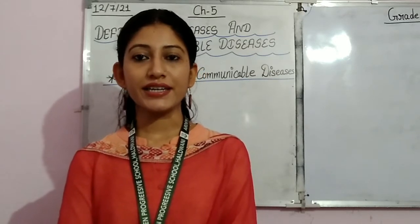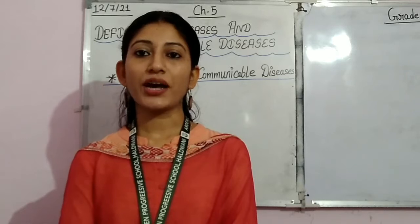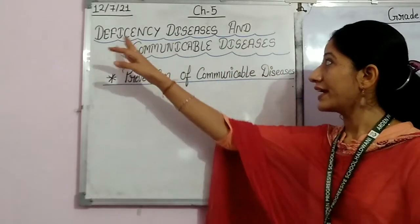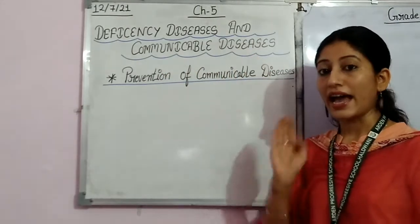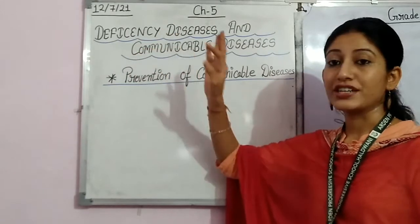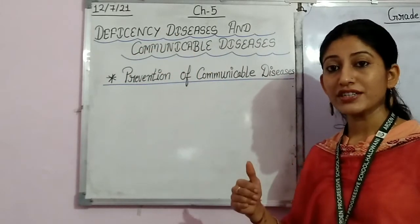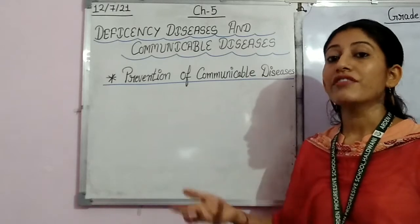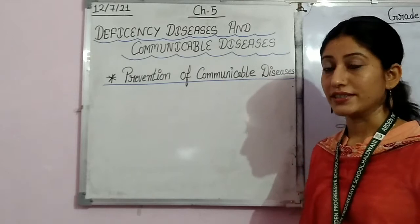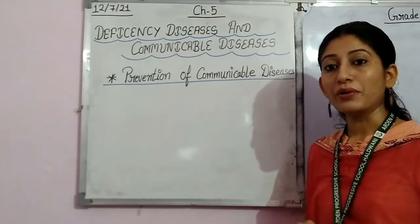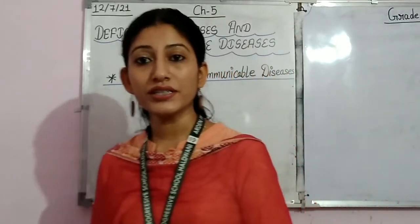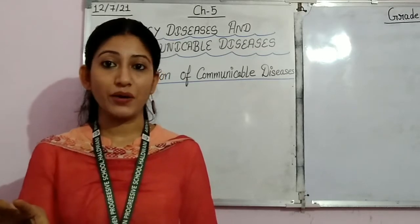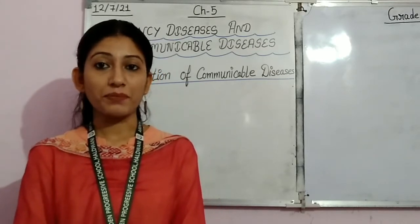As you all know, in science we have started our chapter number 5 and almost all the topics of chapter 5 we have covered. Its name is Deficiency Diseases and Communicable Diseases. In this chapter we discussed what deficiency diseases are, how to prevent them, why these diseases occur, and how to recover. We also discussed communicable diseases — how they occur, what causes them, and how they spread in the surrounding.